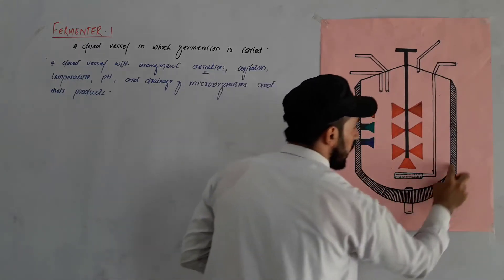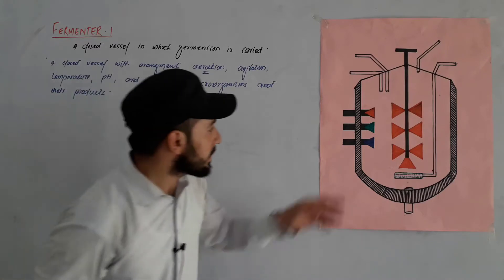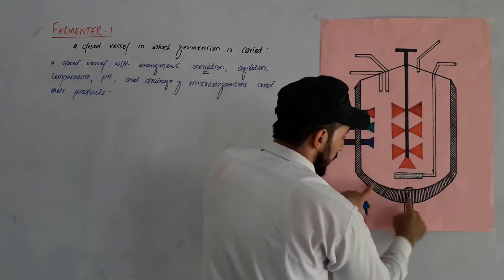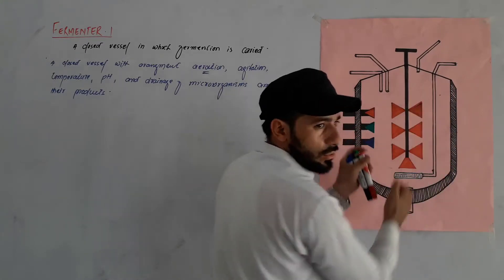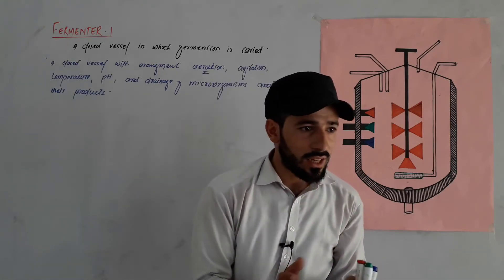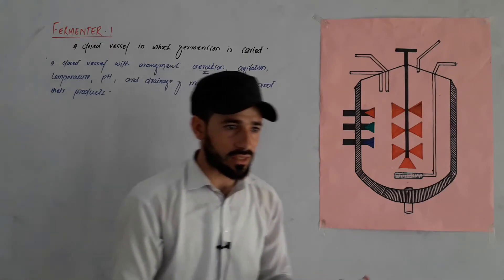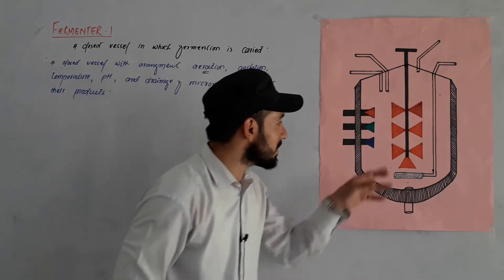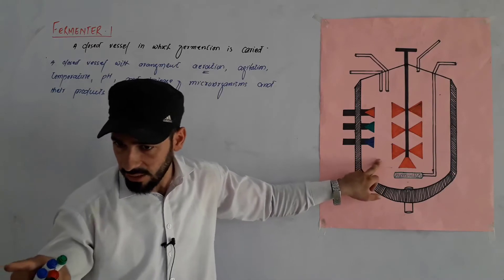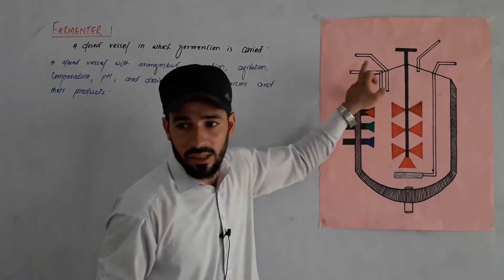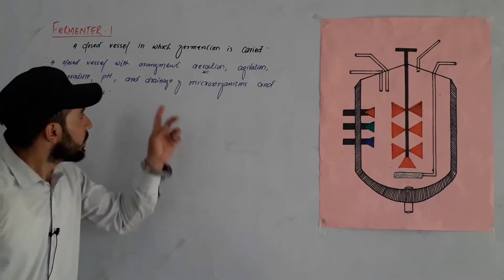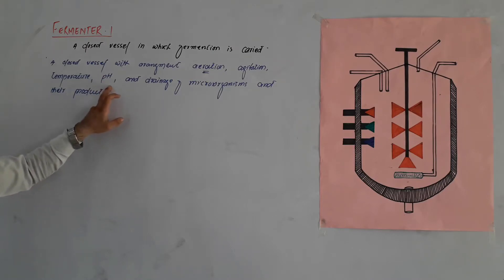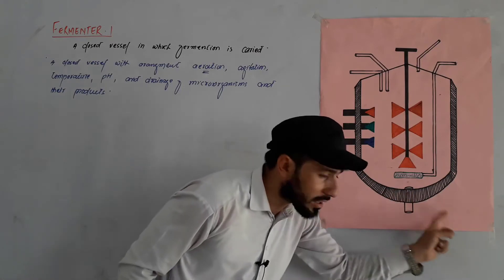Next is the temperature control system. The temperature inside the fermenter is monitored and maintained. If the temperature goes too high or too low, it is adjusted — because the temperature is critical for the safety and activity of the microorganisms. The pH system is also part of this — it is linked to the drainage system.